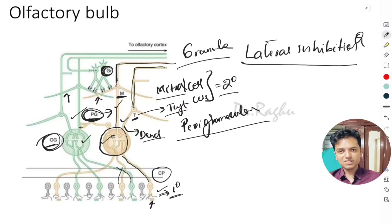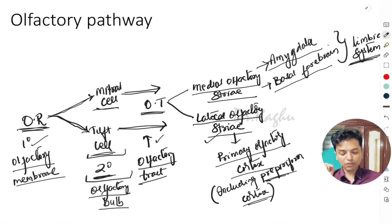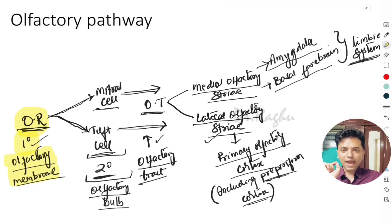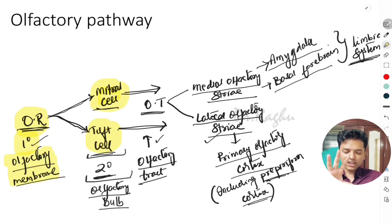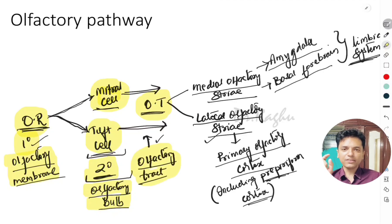The axons of the mitral and tuft cells convey information to the olfactory cortex. To summarize the olfactory pathway: the olfactory receptor is the first-order neuron present in the olfactory membrane in the roof of the nose. It is stimulated via the G-protein coupled receptor, and its axons synapse with the dendrites of the mitral and tuft cells in the olfactory bulb, which are the second-order neurons. Their axons form the olfactory tract.